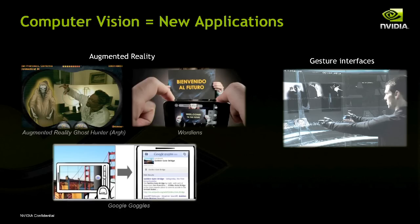New applications are emerging all the time — you go in the iTunes App Store or Android Market and there are all kinds of things. Augmented reality is probably getting the most attention right now. Since this is a graphics conference, I'd expect to hear a lot about it — it's basically the blending of vision and graphics together, where you take the live image and augment it with graphical content. The more sophisticated your vision algorithms, the more compelling that augmented experience can be.